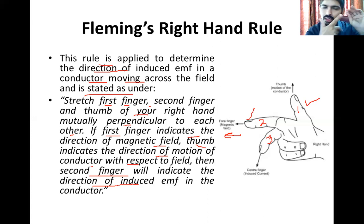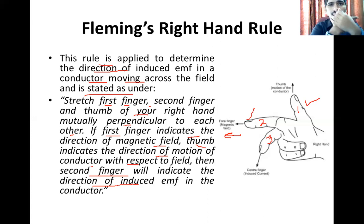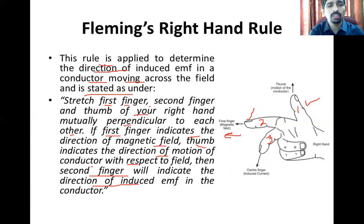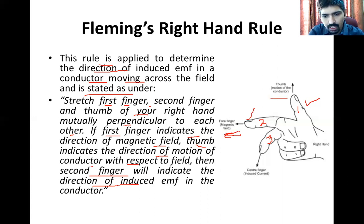The magnetic field is constant in one direction, and the thumb — the motion of the conductor — can be upward or downward. Accordingly, the direction of induced EMF will also change. So this is called Fleming's right-hand rule: thumb indicates motion of the conductor, first finger indicates magnetic field direction, and the middle finger indicates the induced current and induced EMF direction.